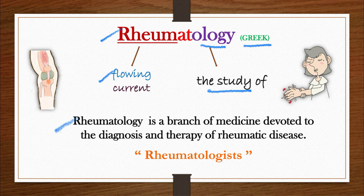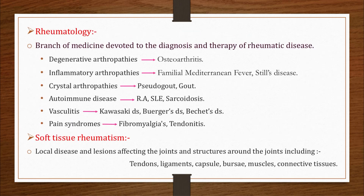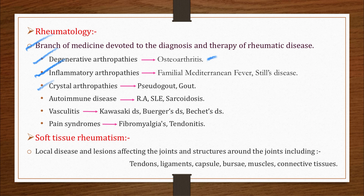Rheumatology is a branch of medicine devoted to the diagnosis and therapy of rheumatic disease, performed by a specialist known as a rheumatologist. Rheumatic diseases include degenerative arthropathies like osteoarthritis — 'arthropathy' meaning any disease of joints — inflammatory arthropathies like familial Mediterranean fever and Still's disease, and crystal arthropathies like gout and pseudogout.